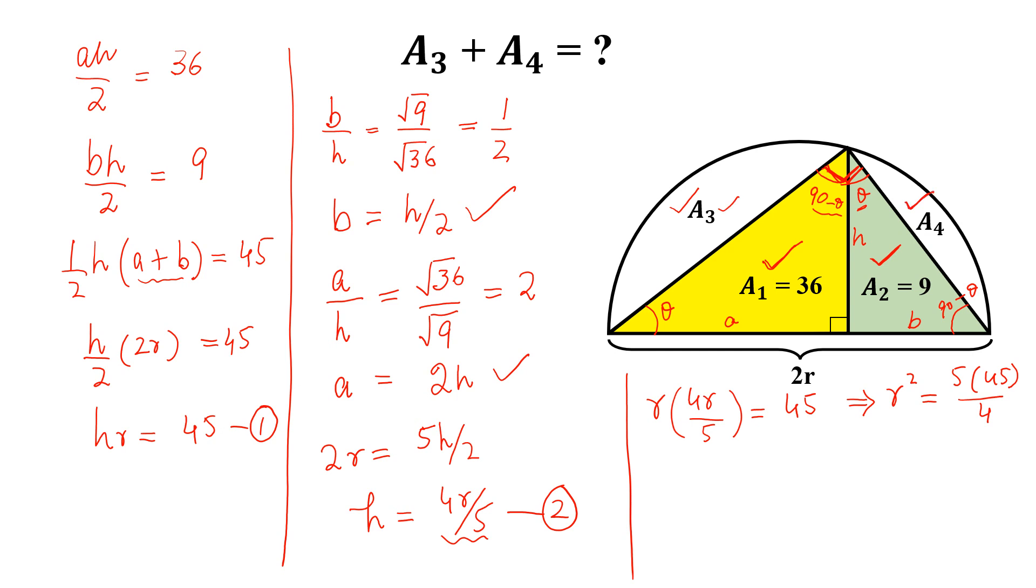So the required area A3 plus A4 will be equal to the area of the semicircle, so half of pi r square, and r square is 5 into 45 divided by 4, minus the A1 plus A2, and this is 45. So by taking 45 common we get 5 pi divided by 8 minus 1, and this is the required area A3 plus A4.